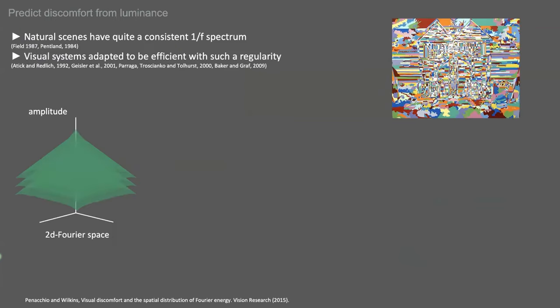So one of the most consistent regularities of natural scenes is that the luminance contrast energy falls off with spatial frequency following a power law, a property often referred to as 1 over f. This is illustrated here by this green family of regular 1 over f cones in logarithmic coordinates. A lot of studies have shown that the visual system is more efficient at processing stimuli with a 1 over f amplitude spectrum and we have shown that deviation of the luminance content of an image with respect to this is an excellent predictor of visual discomfort.